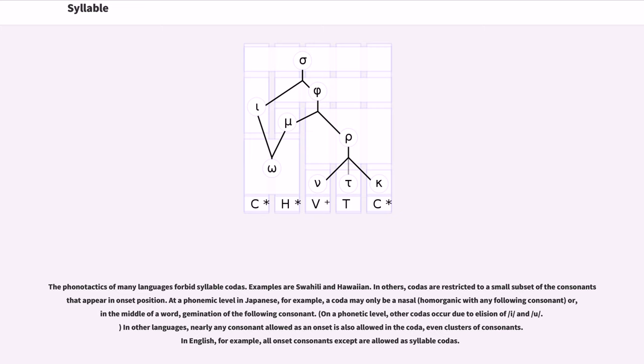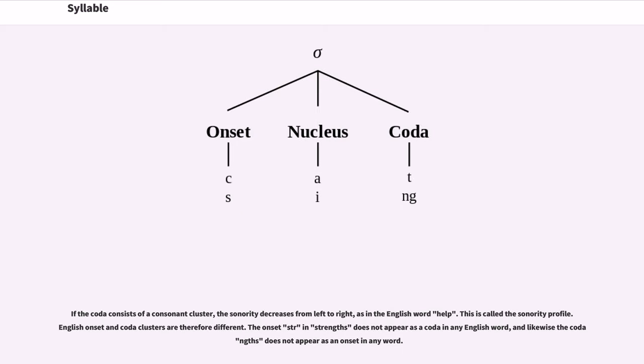In others, codas are restricted to a small subset of the consonants that appear in onset position. At a phonemic level in Japanese, for example, a coda may only be a nasal or, in the middle of a word, gemination of the following consonant. In other languages, nearly any consonant allowed as an onset is also allowed in the coda, even clusters of consonants. In English, for example, all onset consonants except h are allowed as syllable codas. If the coda consists of a consonant cluster, the sonority decreases from left to right, as in the English word help. This is called the sonority profile.